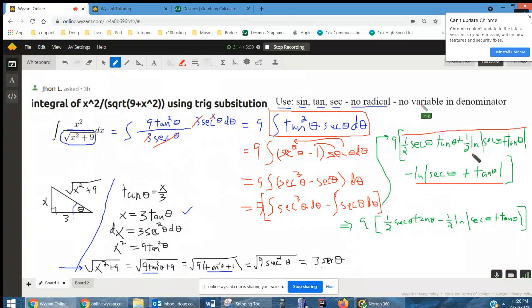And I can see that these last two terms are similar. So I have LN of absolute value of secant theta plus tangent theta. So I have half one of those minus one of those. That gives me minus a half.